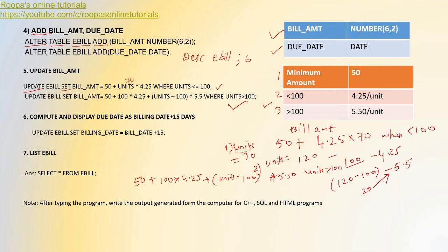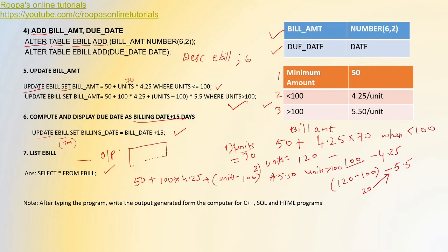The next step is to compute and display the due date as billing date plus 15 days. This is very easy — it is given in the question itself. The command is: UPDATE ebill SET due_date = bill_date + 15. Finally, to generate the output and show all records, use SELECT * FROM ebill. Whatever output you get on screen, please write that in your answer paper and submit it to your invigilator.